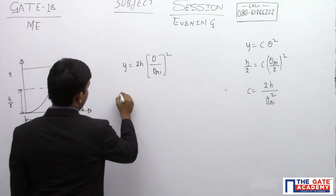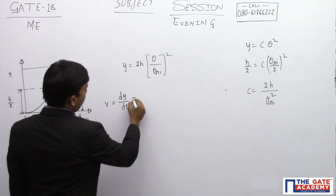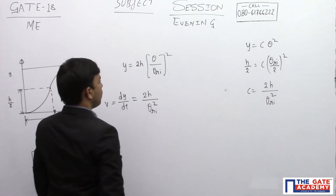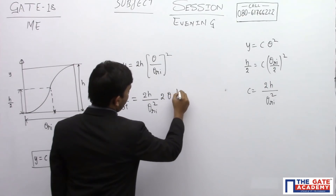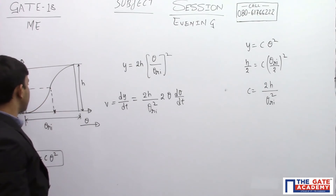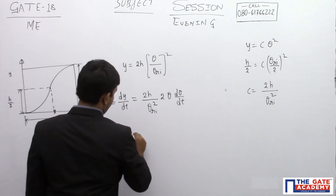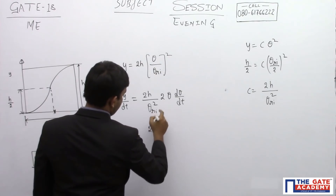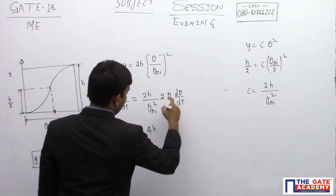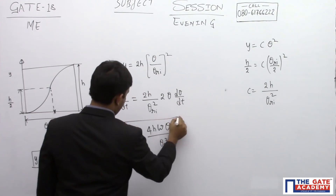To find velocity, I differentiate: v = dy/dt. Differentiating y = (2h/theta_ri²) × theta² with respect to t gives v = (2h/theta_ri²) × 2 theta × (d theta/dt). Here theta is the displacement of the cam and d theta/dt is the angular velocity of the cam, which is omega. Therefore, velocity of the follower = 4h × omega × theta / theta_ri².